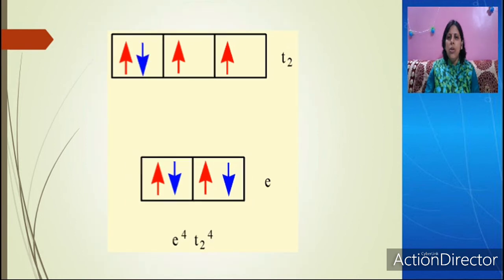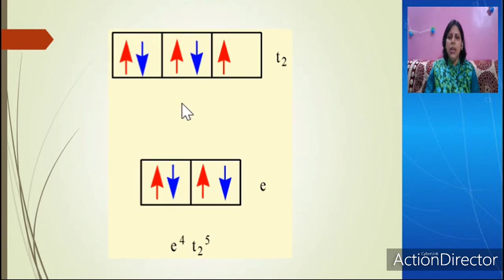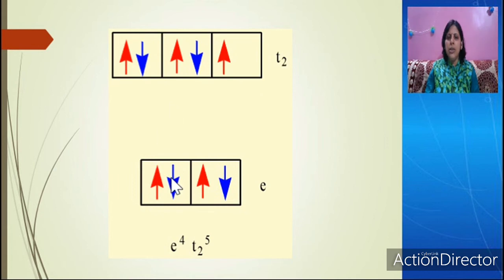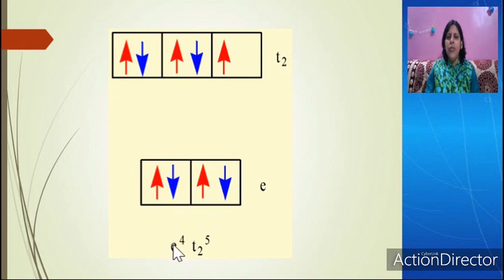Now we go to the D9 configuration. In D9 configuration the electrons fill 1, 2, 3, 4, 5, then 6, 7, 8, 9. E has 4 electrons and T2 has 5 electrons, so the configuration becomes E4, T2(5).